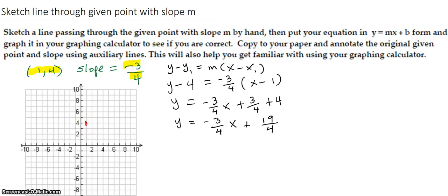1, 4 is right here, and then the slope tells us to run for 1, 2, 3, 4, and rise a negative 3 which means goes down, 1, 2, 3. And then we should draw this line through here.